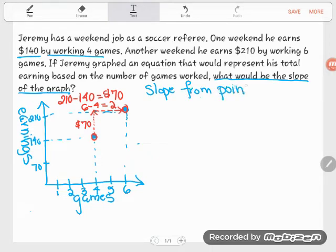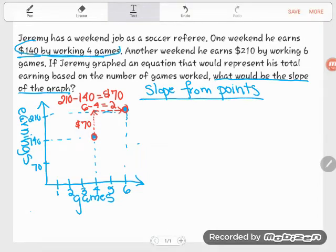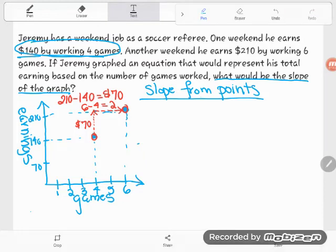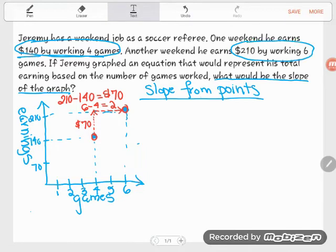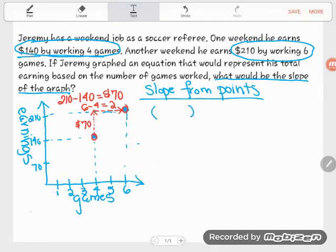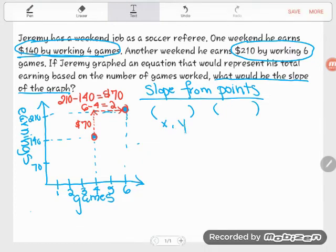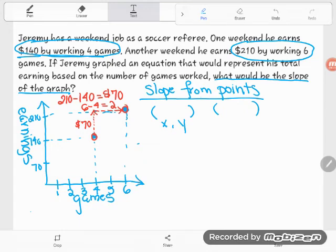Now you might say, Kate, I haven't been given points, but you sure have - you just might not have recognized it in word problem form. Let me show you what I mean. This is a point: he earns $140 by working 4 games. It's the relationship between an independent variable, a number of games, and a dependent variable, the money he makes depending on the games he works. And there's another point - there's another relationship between that same independent variable, the games he works, and the dependent variable, the money he earns. So super important though: when you do your slope, we have our independent variable, our x first, and then our dependent variable, our y second.